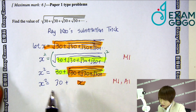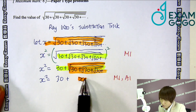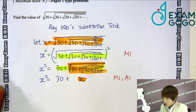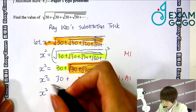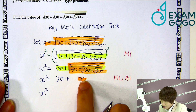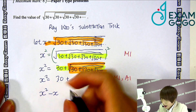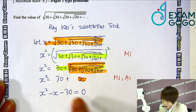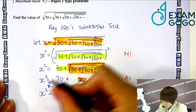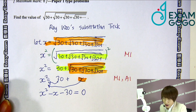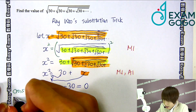Now you want to solve this quadratic equation. Of course, the first thing is to move every term to the left-hand side to make it of the form ax² + bx + c = 0. So x² stays on the left, then −x and −30 move over, giving x² − x − 30 = 0.